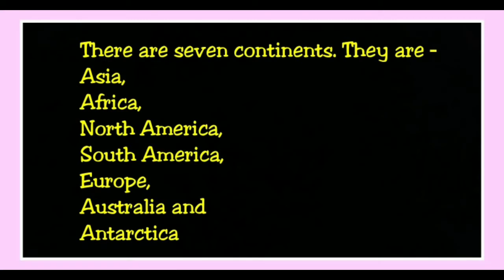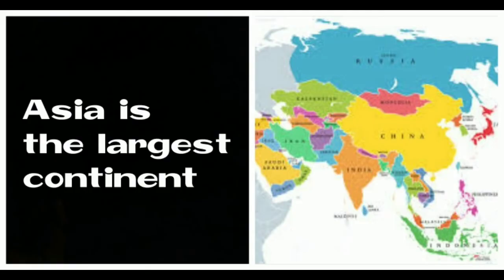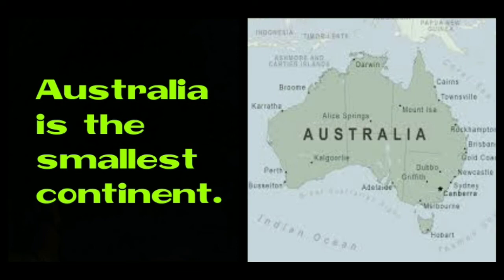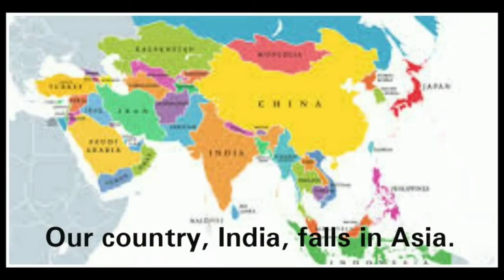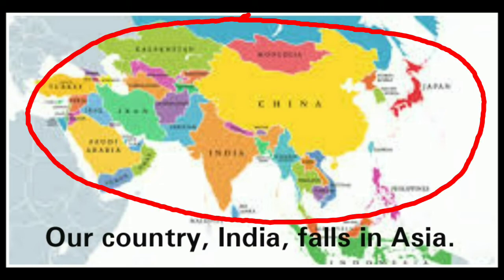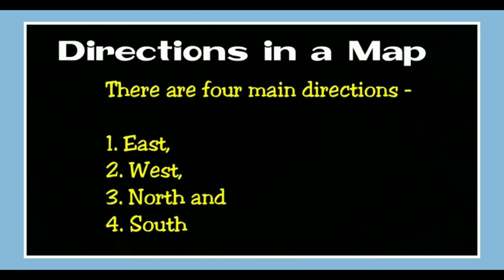Big areas of land are called continents. There are seven continents in the world: Asia, Africa, North America, South America, Europe, Australia, and Antarctica. Asia is the largest continent in the world, and Australia is the smallest continent. Our country, India, falls in Asia.